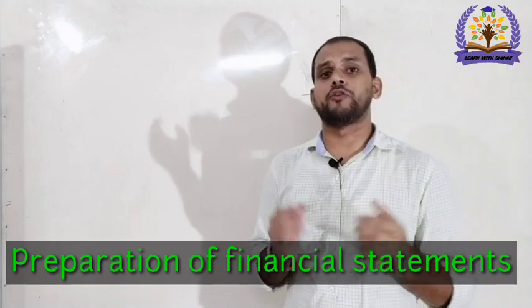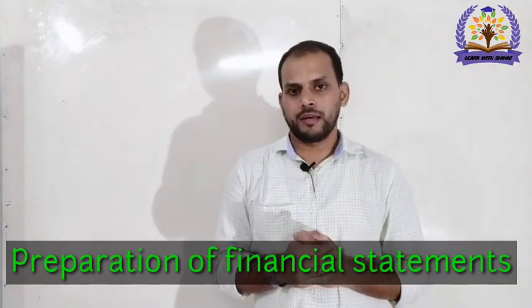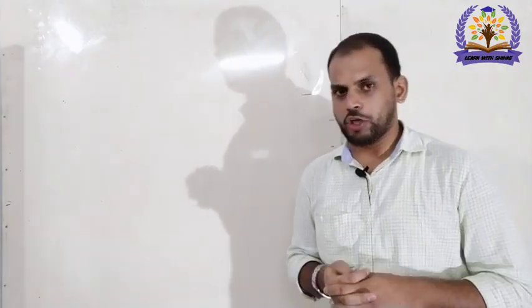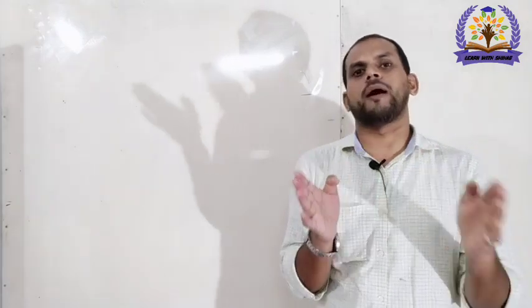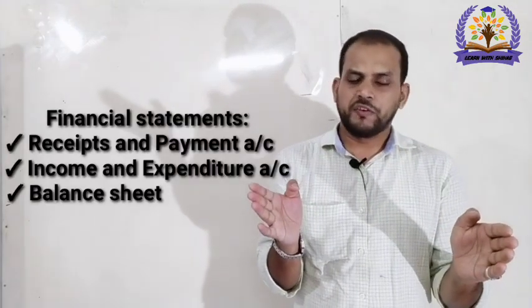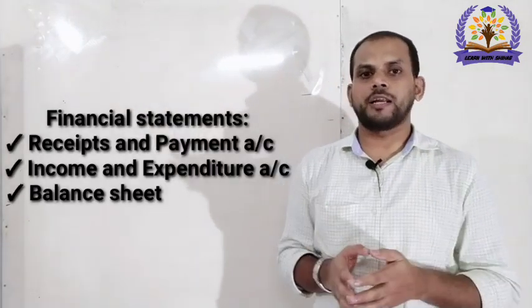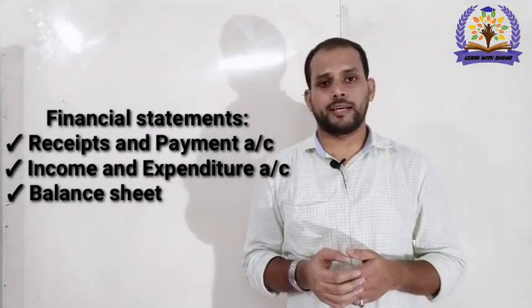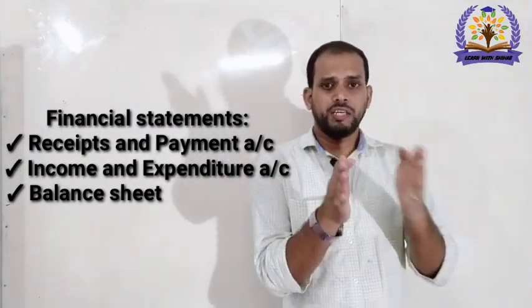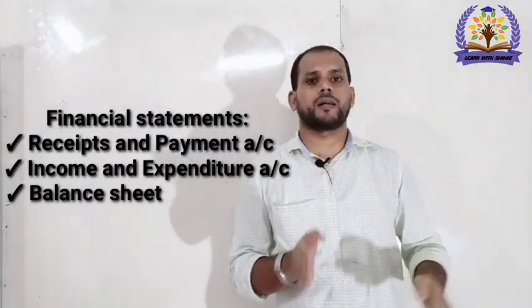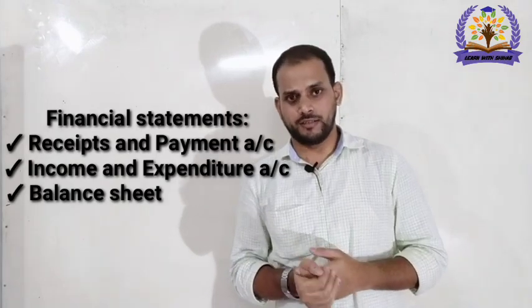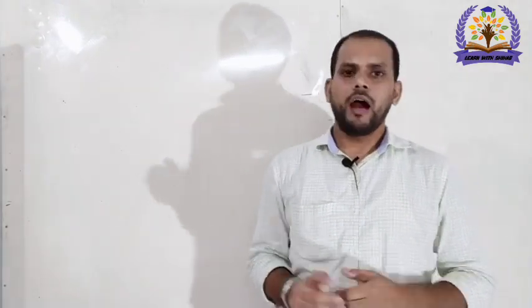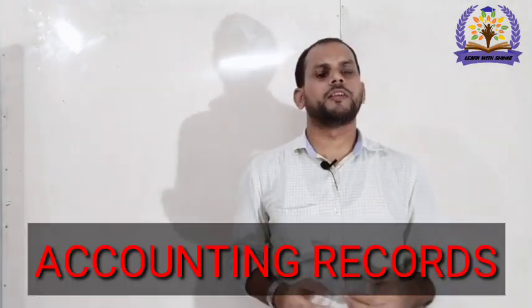The final accounts are prepared for non-profit organizations in three parts: first, the Receipt and Payment Account; second, the Income and Expenditure Account; and third, the Balance Sheet. These three final accounts are prepared for non-profit organizations.